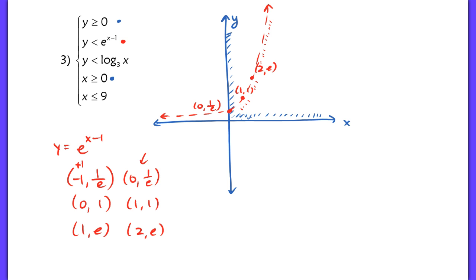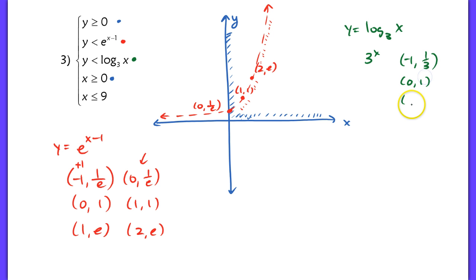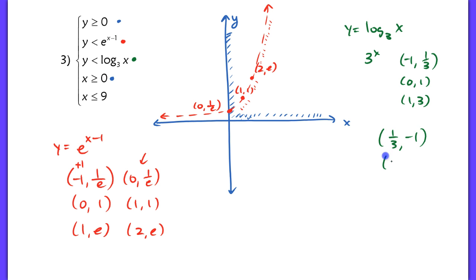The next inequality involves a log equation. y is greater than log base 3 of x. Remember, this is the inverse of 3 to the x. We take the coordinates for 3 to the x — (negative 1, 1/3), (0, 1), and (1, 3) — and flip the x and y because it's the inverse. So on the graph of log base 3 of x, we have the points (1/3, negative 1), (1, 0), and (3, 1). This curve is shaded above, representing all values greater than log base 3 of x.